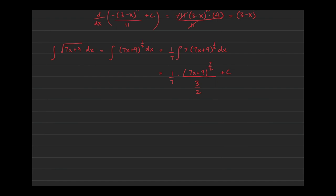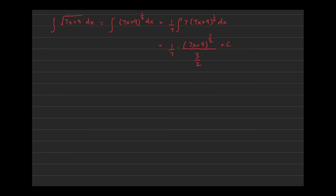Pause the video and convince yourself that this really is the antiderivative — that differentiating this function gives back the integrand. Let's do one more: e^(5x - 7). We know the derivative of the exponent would just be 5, and that's the constant we're missing.